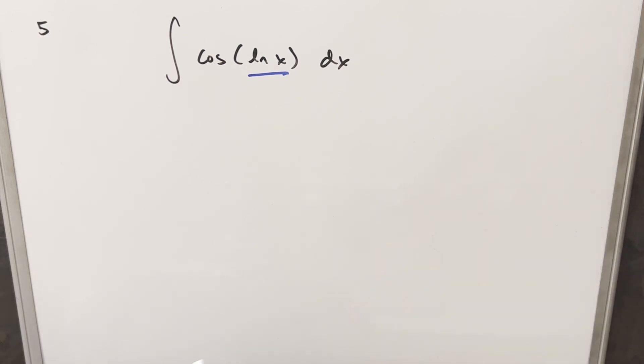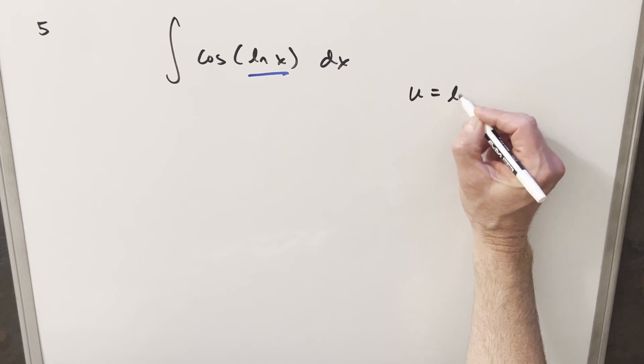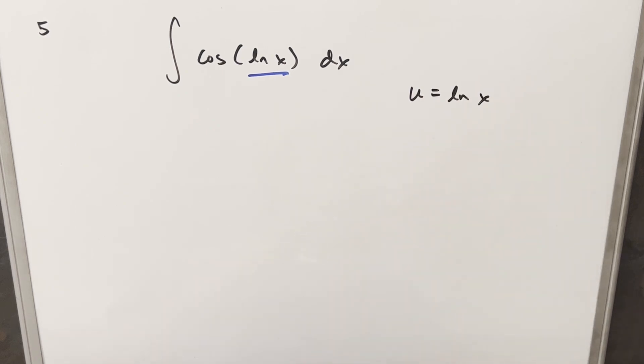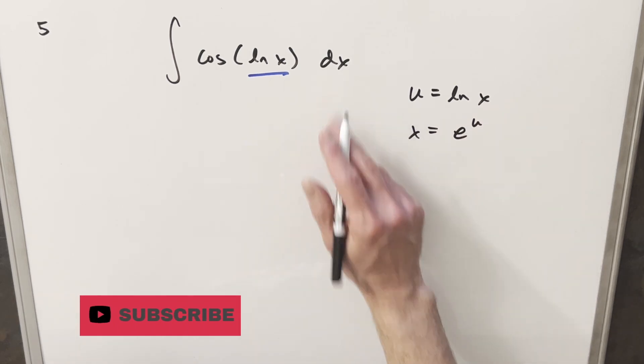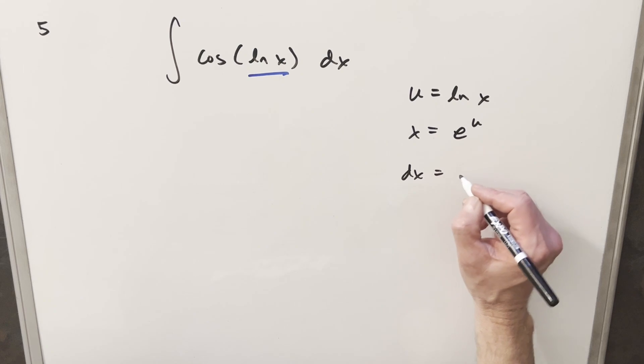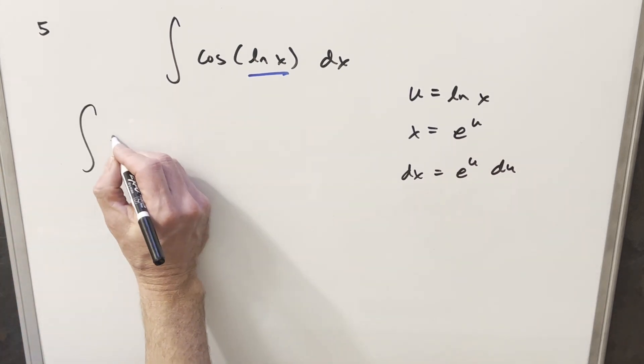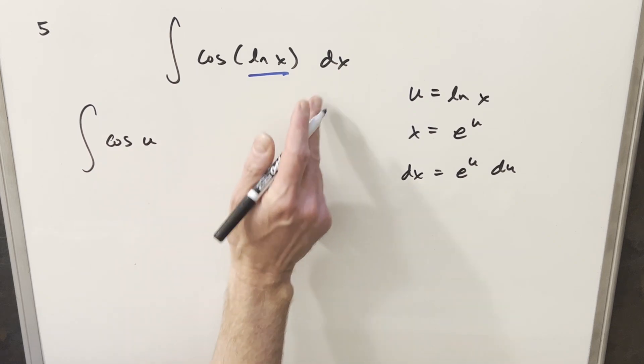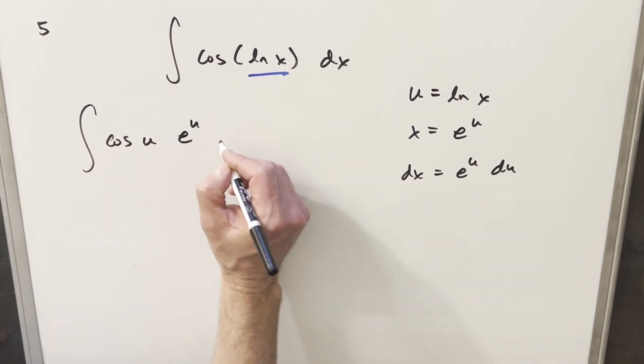We could probably go right to integration by parts. I think what I want to do instead is do a u substitution first. Let's just try it that way. I can solve for x. We can say x is going to be just e to the u. I'll take a derivative to get my dx value. So we have dx is e^u du. So what's going to happen is we end up with cosine of u, and our dx is going to be just this e^u du.